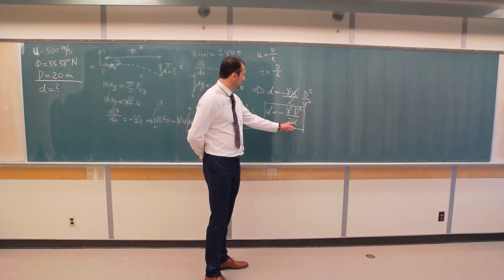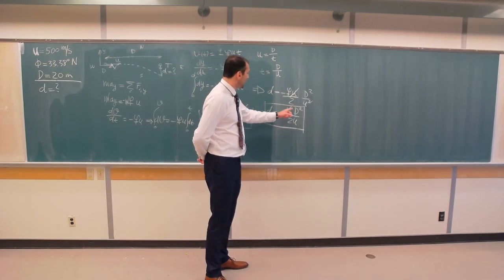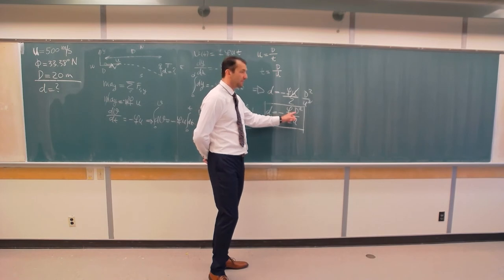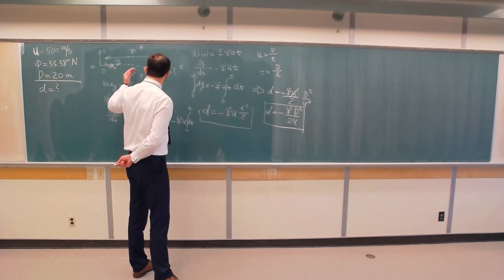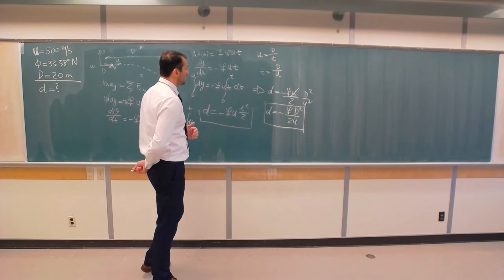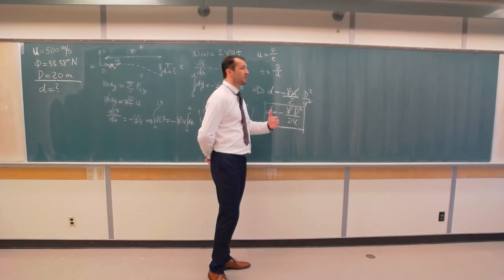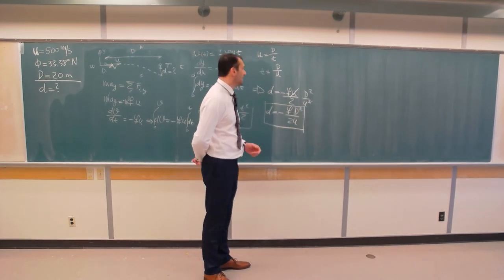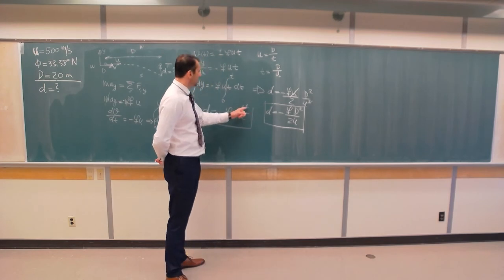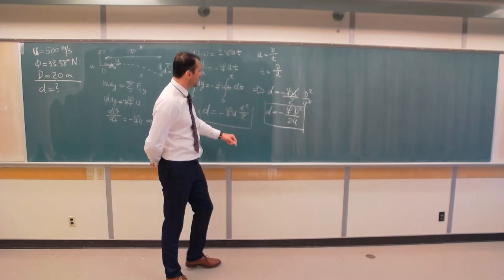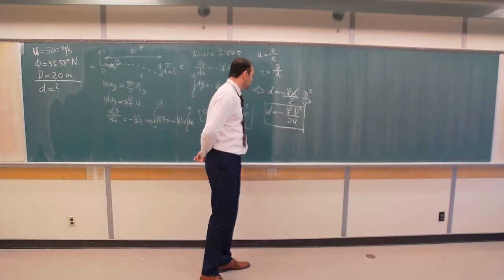You can see the higher the velocity, the smaller the displacement. But the longer the bullet is traveling, the larger displacement due to the rotation of the earth, because Coriolis effect has more time to act. Because it's proportional to the time squared. And of course, it's proportional to the Coriolis parameter.